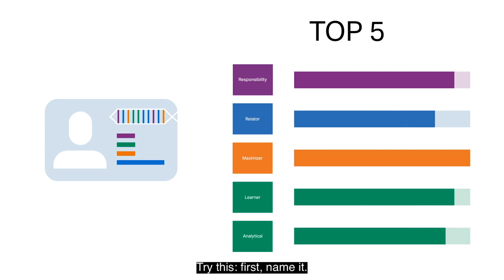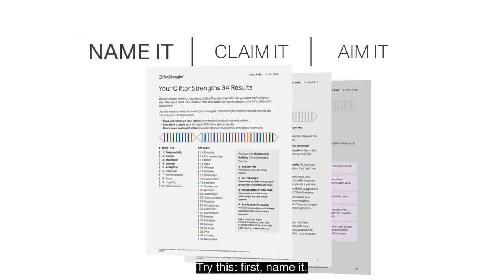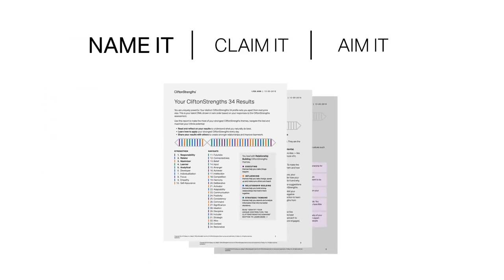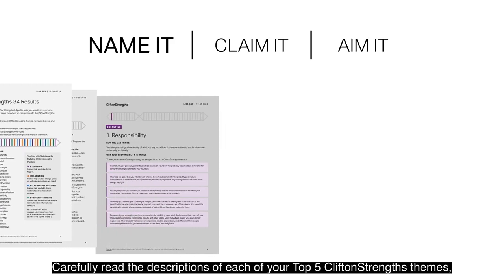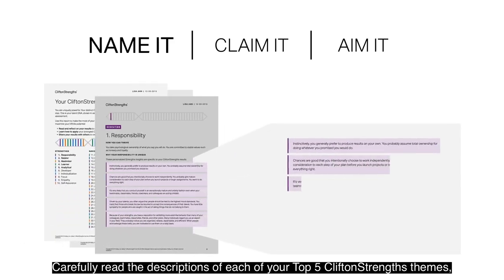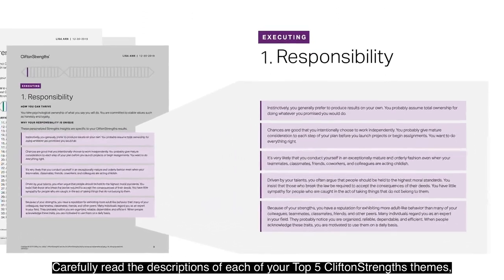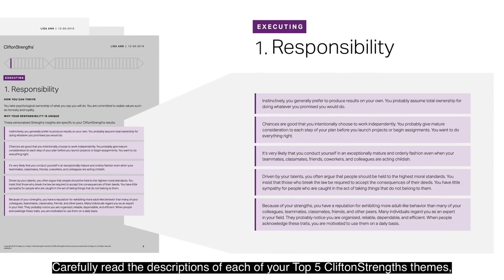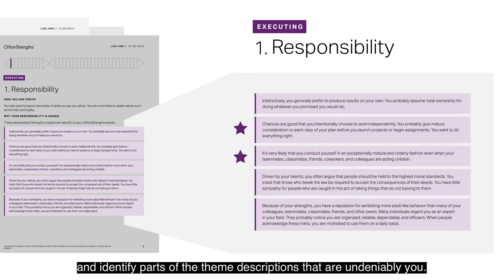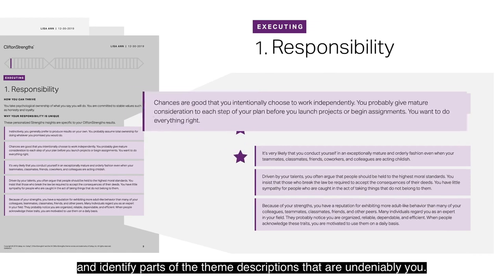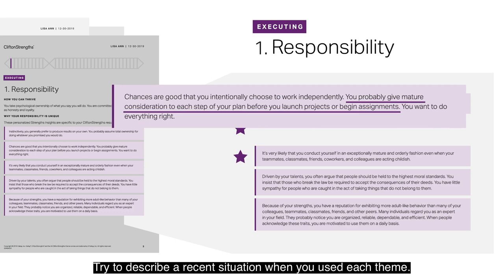Try this. First, name it. Carefully read the descriptions of each of your top five CliftonStrengths themes and identify parts of the theme descriptions that are undeniably you. Try to describe a recent situation when you used each theme.